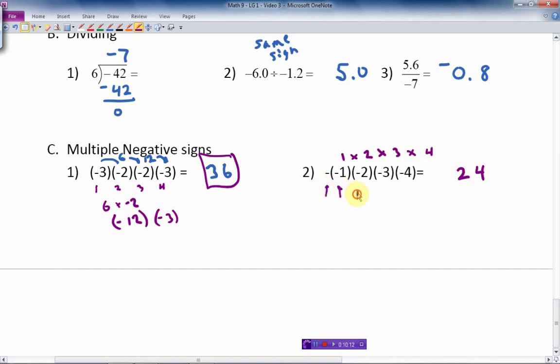Well, there's 1, 2, 3, 4, 5. That's an odd number of negative signs. Therefore, the answer is going to be negative 24. And there we go.